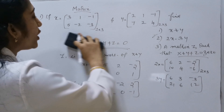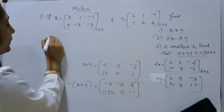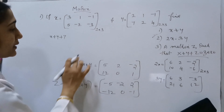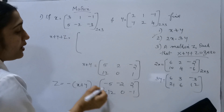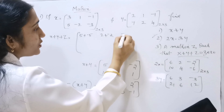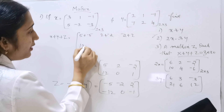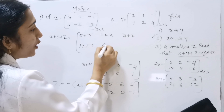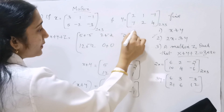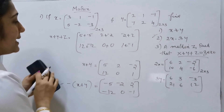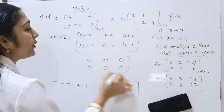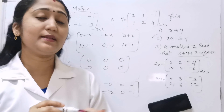Let us verify: X plus Y plus Z. Substituting and adding: 5 plus minus 5, 2 plus minus 2, minus 2 plus 2; then 12 plus minus 12, 0 plus 0, 1 plus minus 1. Every element gives 0, so we get the zero matrix. This confirms that X plus Y plus Z equals 0.